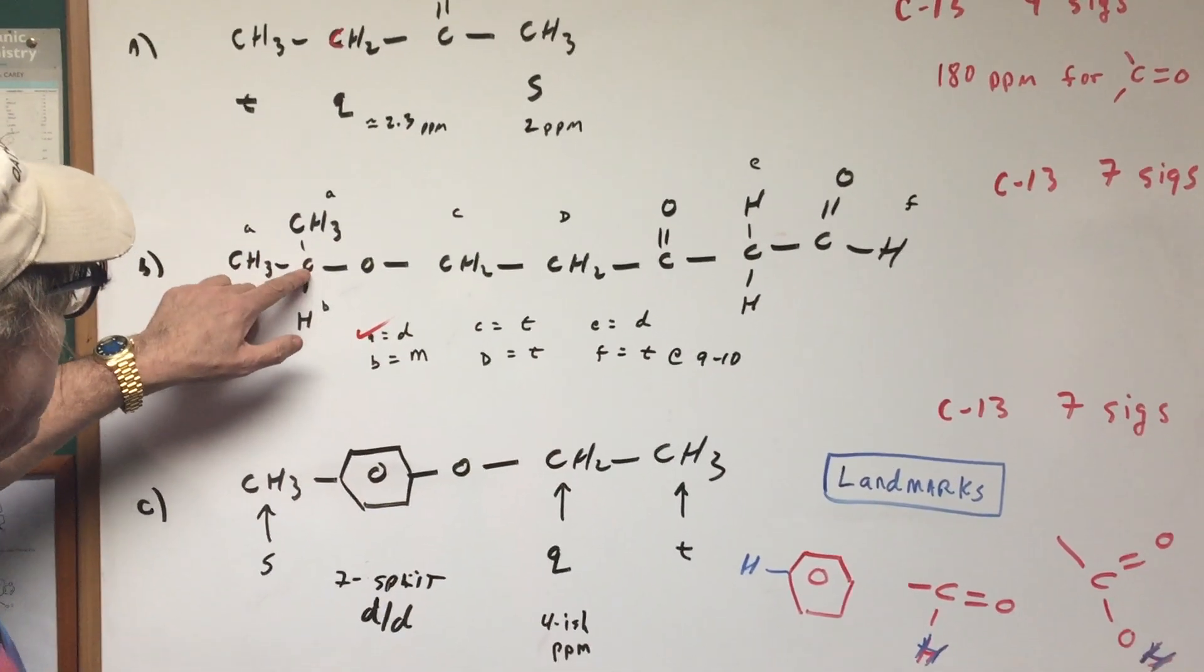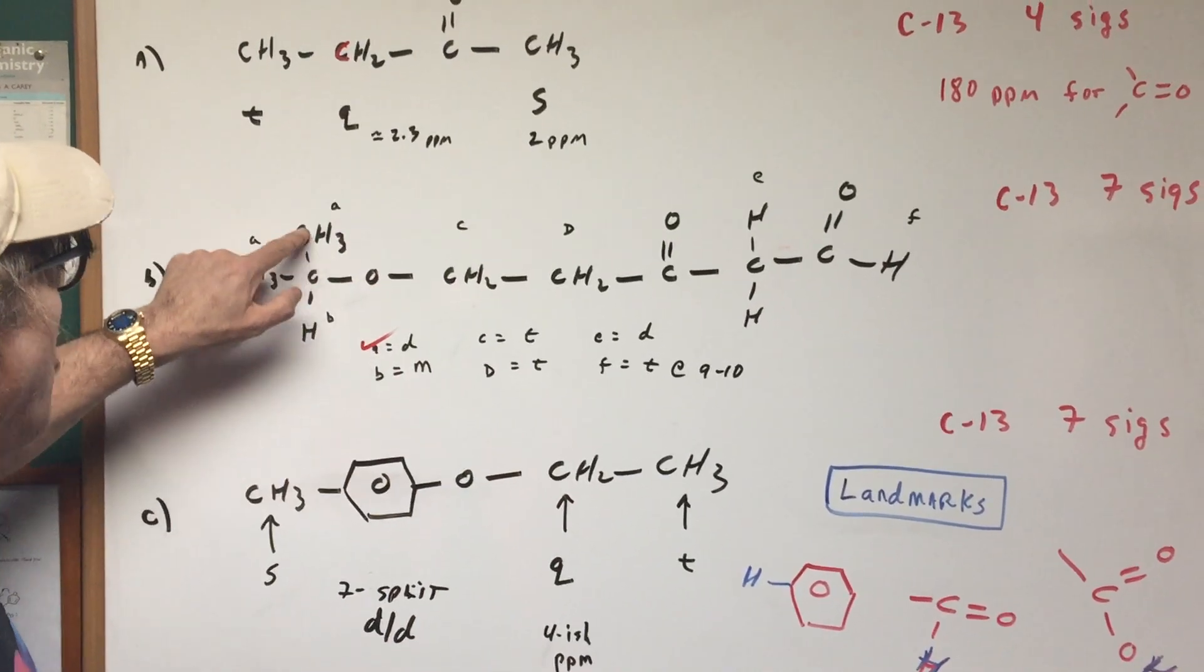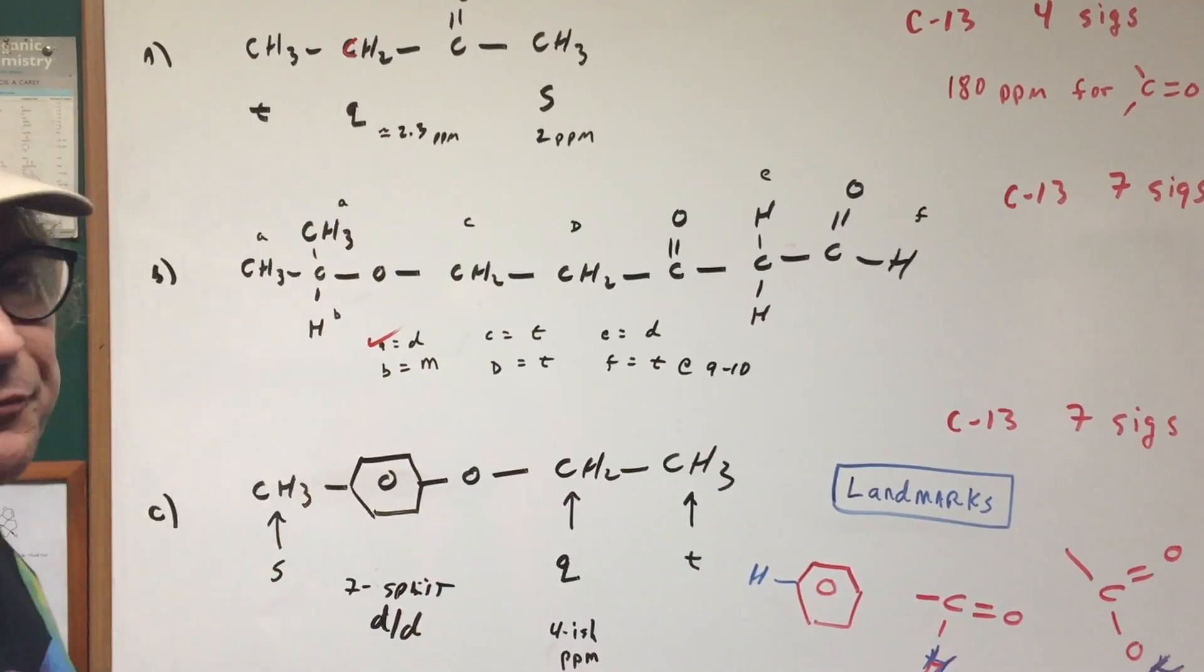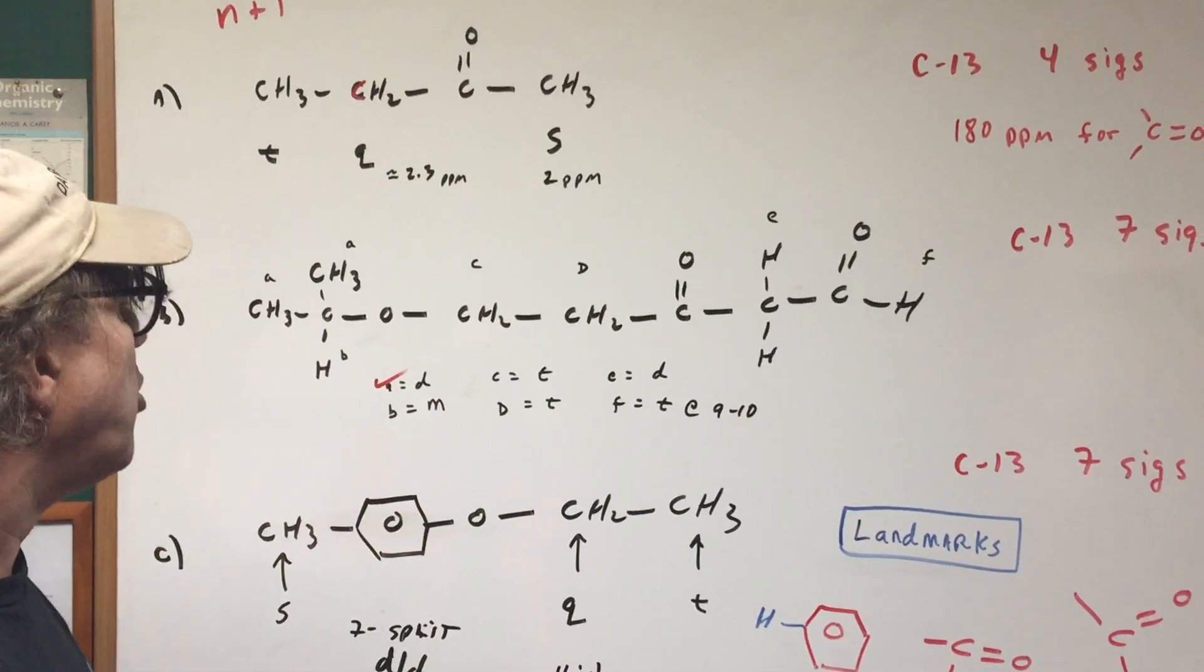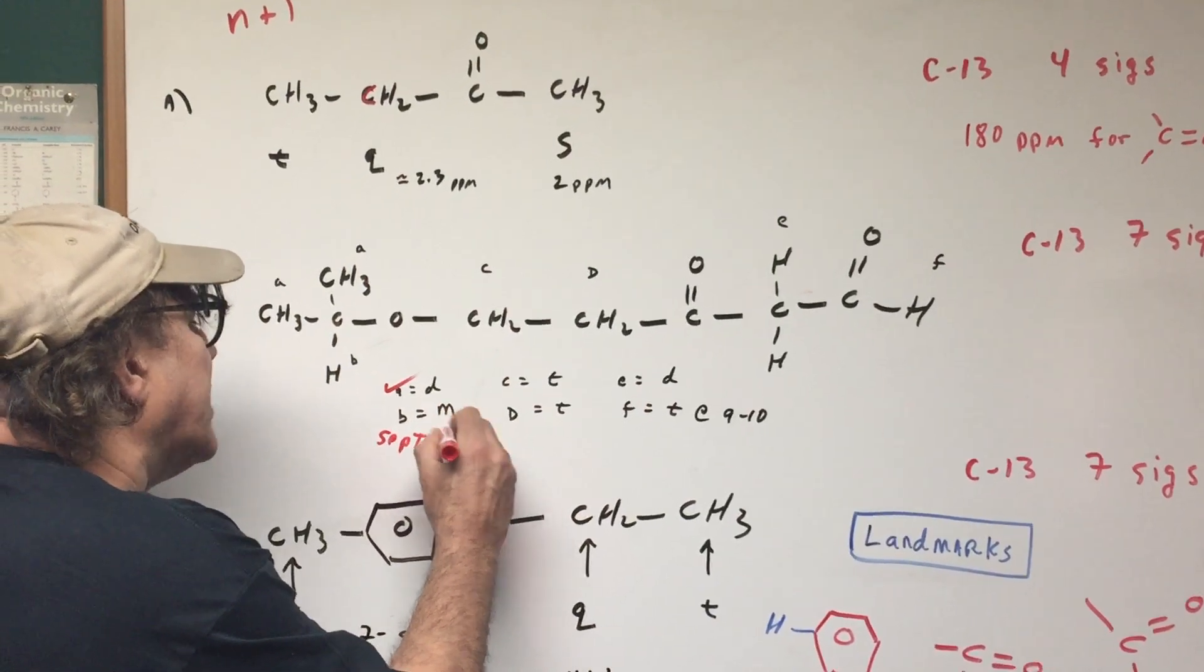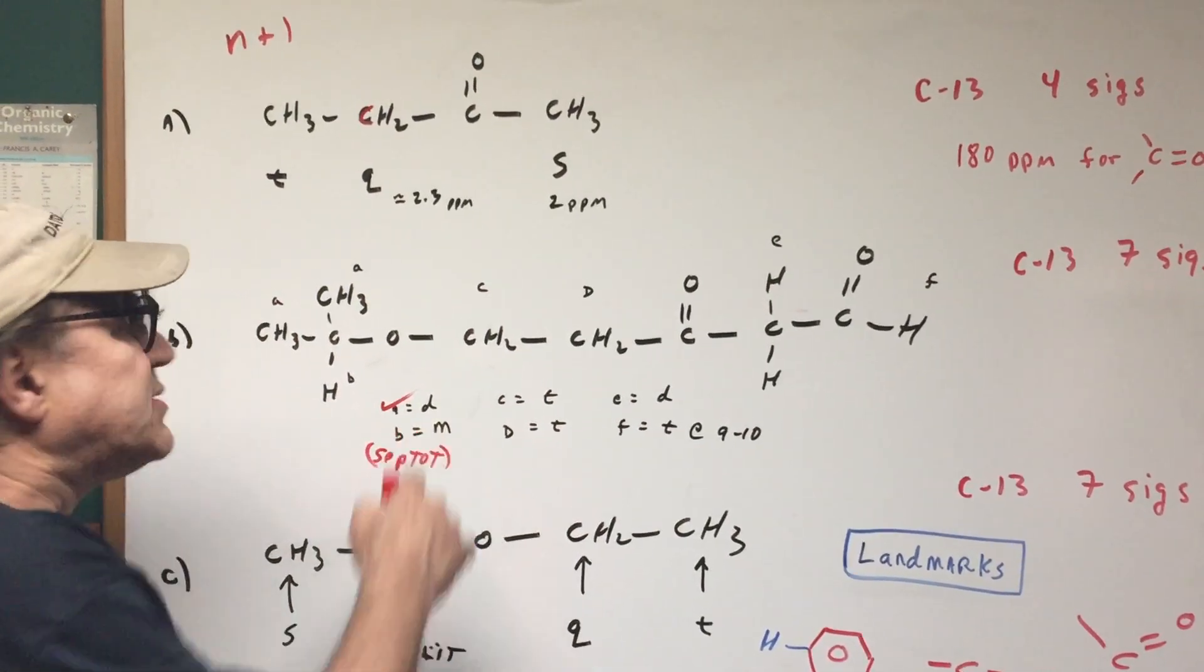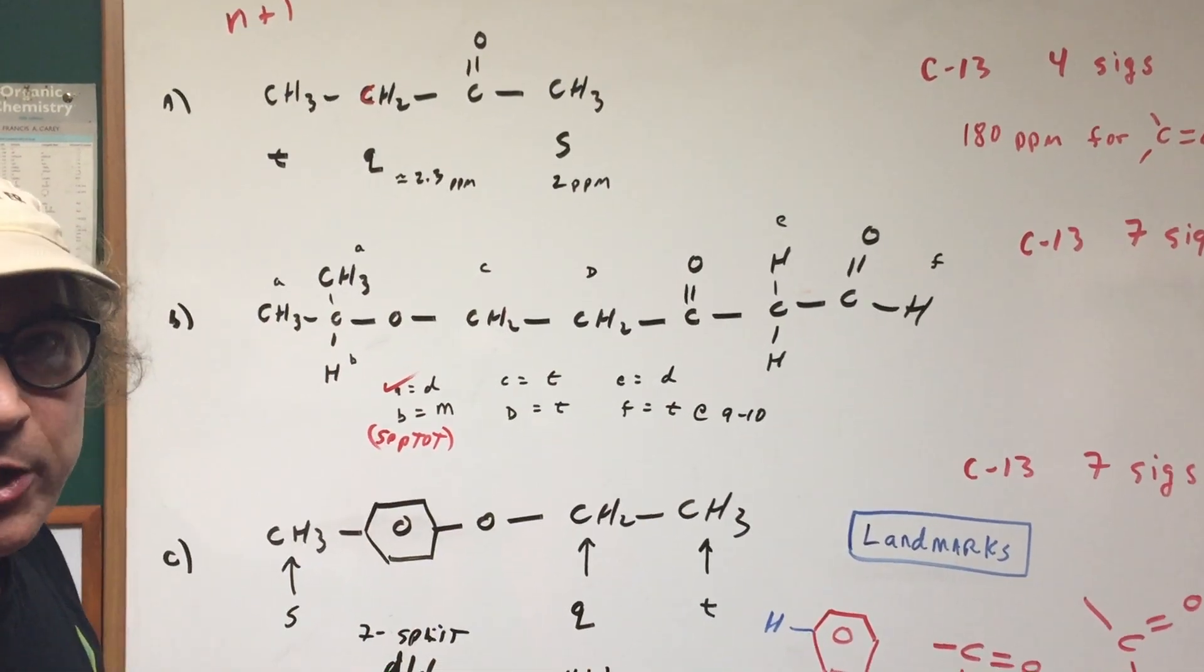How about B? Well, there's the mother carbon. To go to the right, there's nothing. You go up, there's three. You go to the left, there's three. Three and three is six. You use the n plus one rule, it would give a septet. Sometimes, instead of saying a septet, you would just say multiplet. Because in real life, the lines will usually be very close.